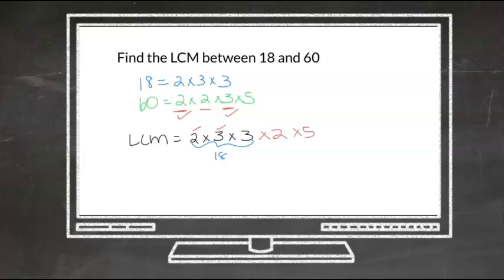Now let's look and see what we have. We have 2 times 3 times 3, which is 18, and then we have times 2 times 5, which is 10. So the least common multiple is 180.